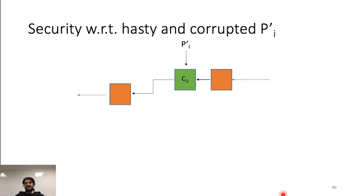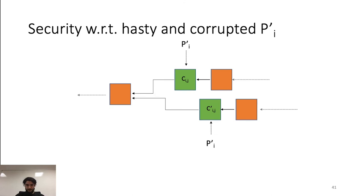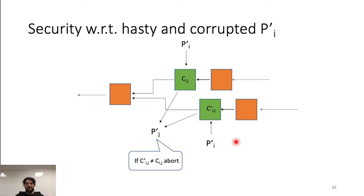Now pi can perform the same computation over MIJ before publishing the next message over the blockchain. Let's analyze the security of our compiler. Consider the case of an adversary pi prime that is hasty. Pi prime will publish a ciphertext CIJ over a branch B1 of the blockchain. After a while, pi prime notices that there is a branch B2, and decides to exploit this new branch to publish a different ciphertext CIJ prime to obtain some advantages in the execution of the protocol. If an honest party pj prime sees both branches B1 and B2, she is able to detect that pi prime misbehaves by publishing two different ciphertexts in the two different branches.